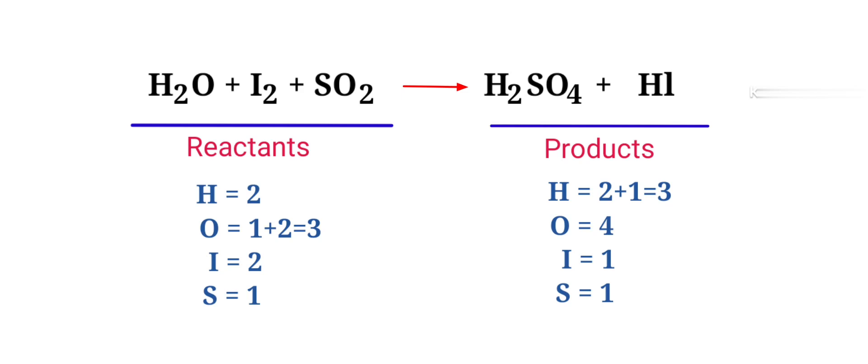In this equation, we need to balance the iodine atoms first. To do this, we need to put a coefficient of 2 in front of HI.